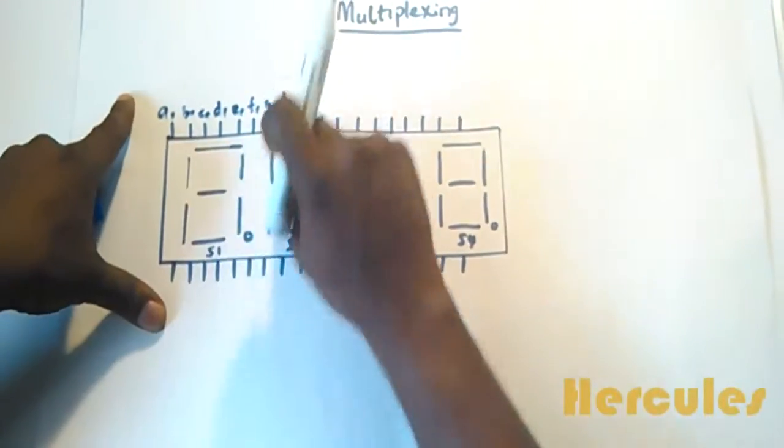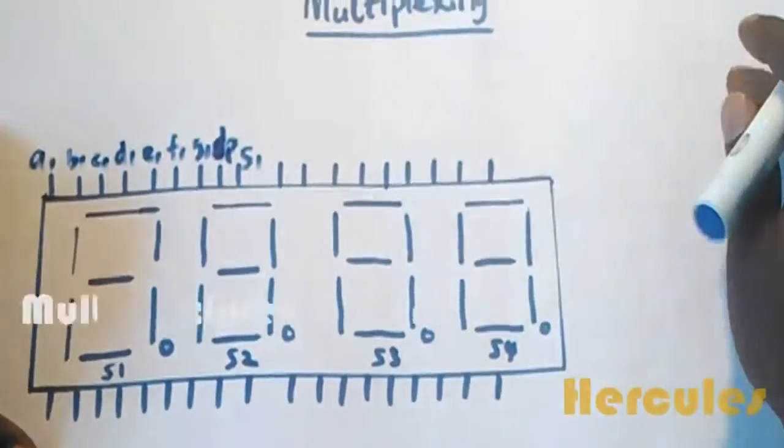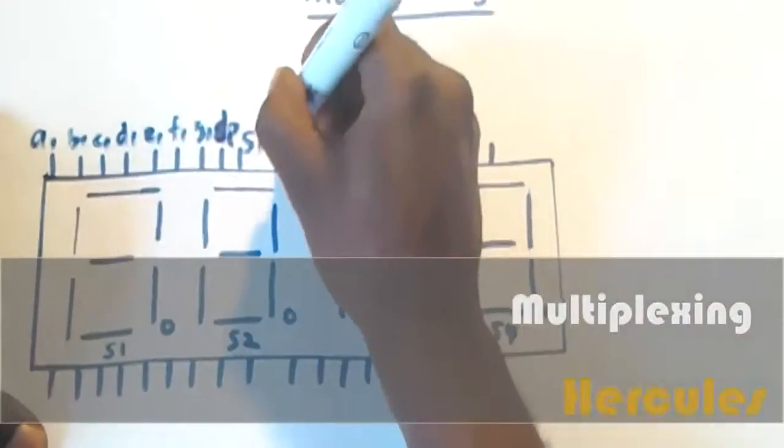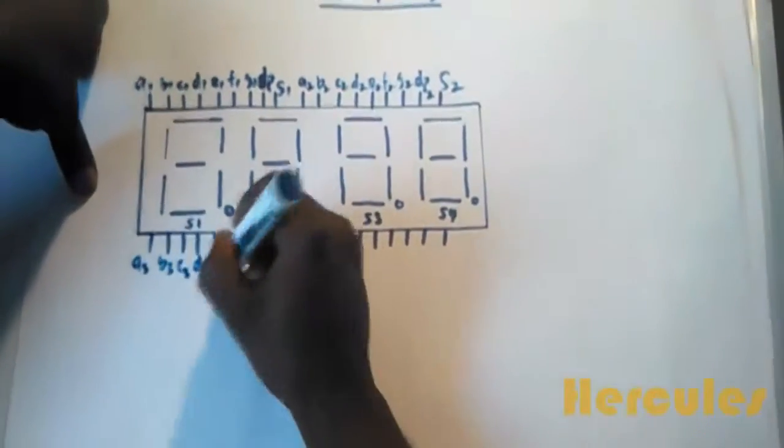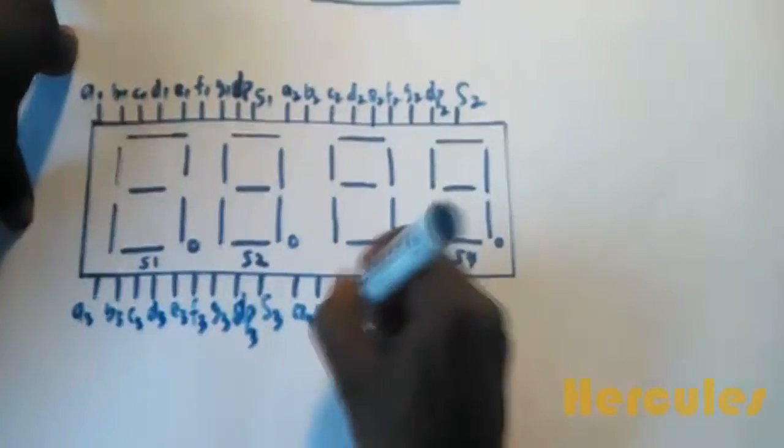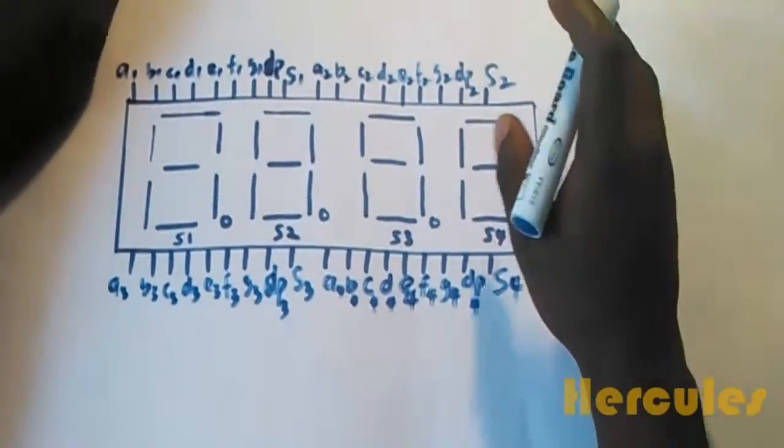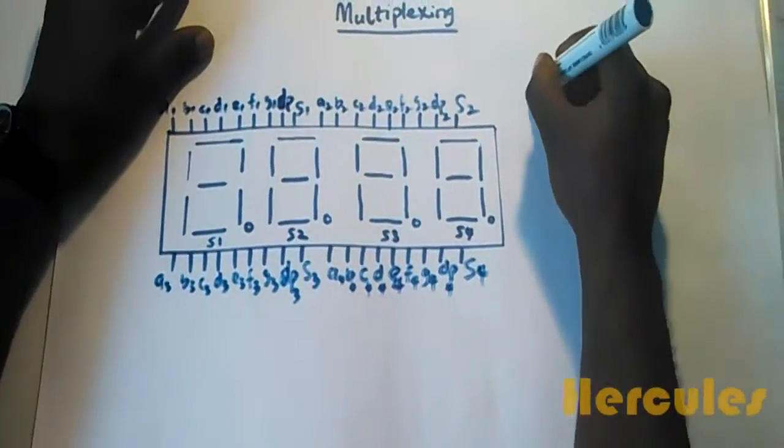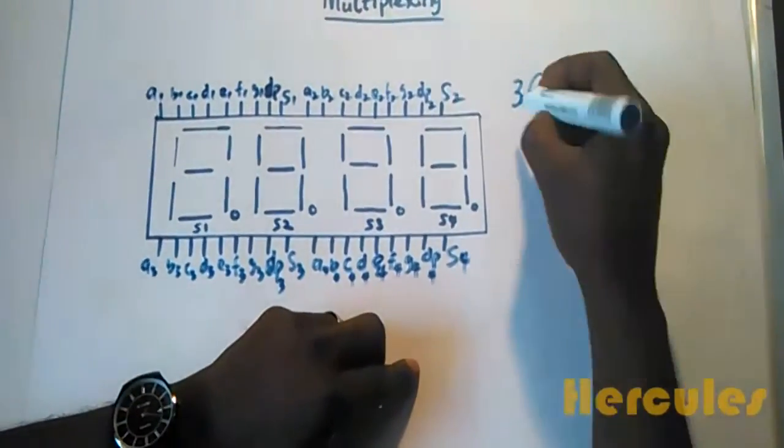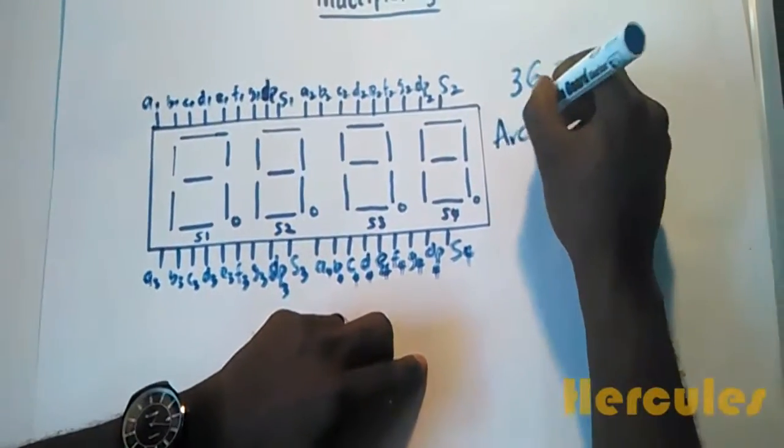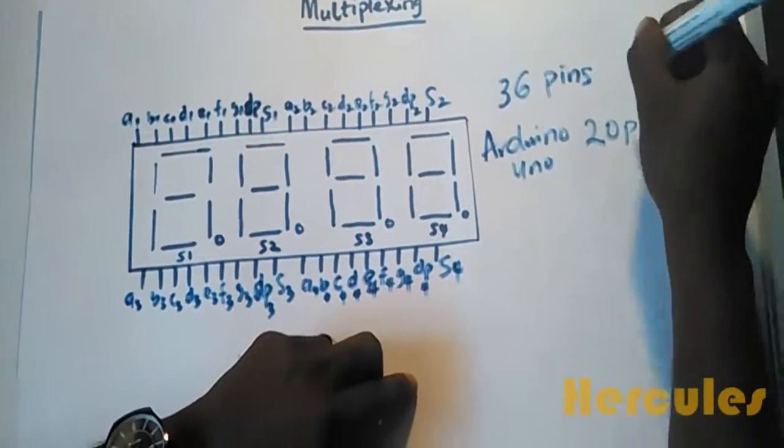For segment 1, we require 9 pins, and that's a lot. I'll do the mapping for the rest of the segment pins. The total number of pins we'll be using is 36 pins. That's a lot compared to the Arduino Uno. The Arduino Uno features only 20 pins, so this won't work with the Arduino Uno.